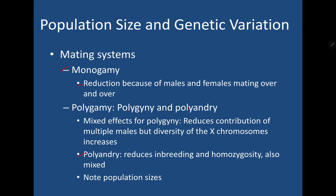Polyandry increases genetic variability within families due to having different fathers, and can also reduce the chances of inbreeding and homozygosity, which increases genetic variation. It's also a mixed bag since it's one female contributing to all offspring. Higher population sizes for both polygyny and polyandry can have significant effects on variation. Small population sizes are less likely to be genetically varied due to a mixture of these factors, including inbreeding.